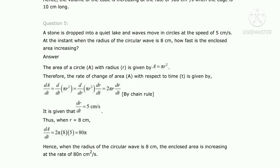Good morning students. In our chapter 'Application of Derivatives' from exercise 6.1, we have already completed four questions. Today we start from question number five: a stone is dropped into a quiet lake and waves move in circles at a speed of 5 centimeters per second. At the instant when the radius of the circular wave is 8 centimeters, how fast is the enclosed area increasing?